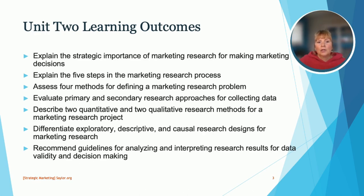Here are the Unit 2 Learning Outcomes: explain the strategic importance of marketing research for making marketing decisions; explain the five steps in the marketing research process; assess four methods for defining a marketing research problem; evaluate primary and secondary research approaches for collecting data; describe two quantitative and two qualitative research methods for a marketing research project; differentiate exploratory, descriptive, and causal research designs for marketing research.